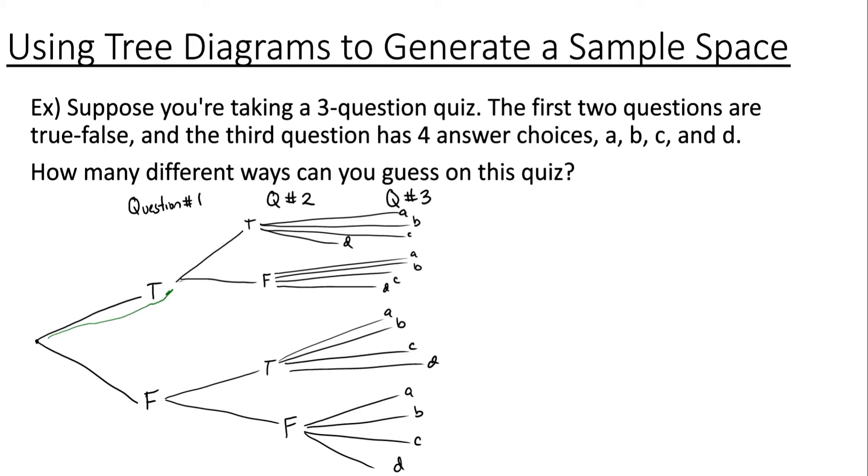So if we follow the uppermost branch we could guess true on the first, true on the second, and then we could guess A on the third question, and that gives us our first possible way we could guess which is true, true, A.